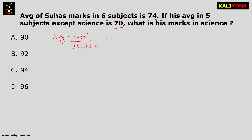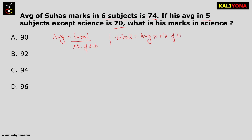That means we have average marks. In this question, we have already been given the average. So, we have to find the total marks. The formula is: total marks equals average marks multiplied by the number of subjects.